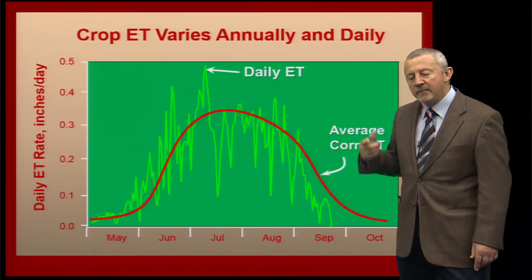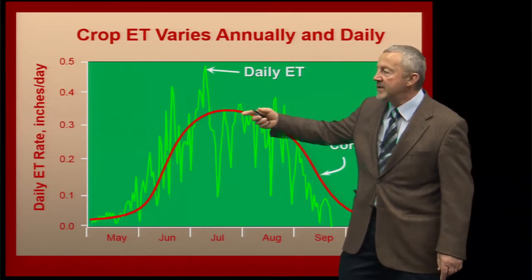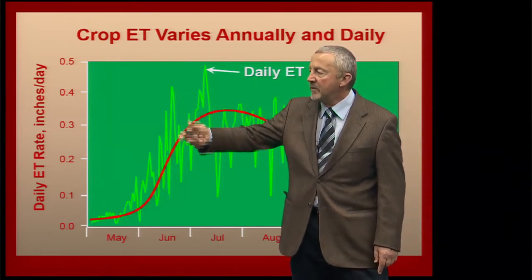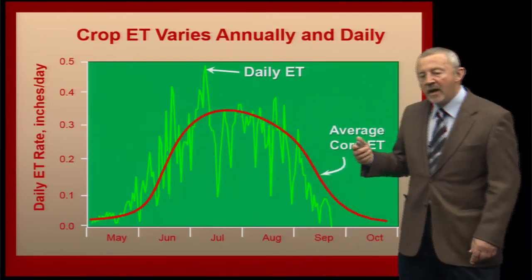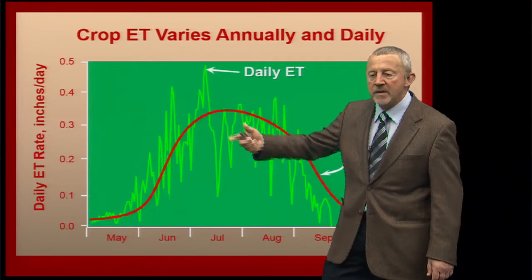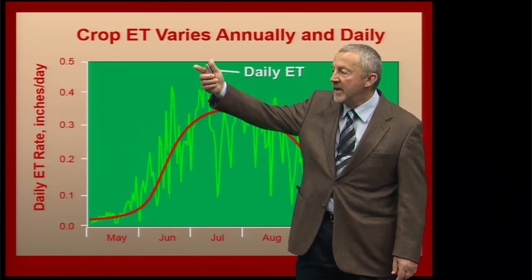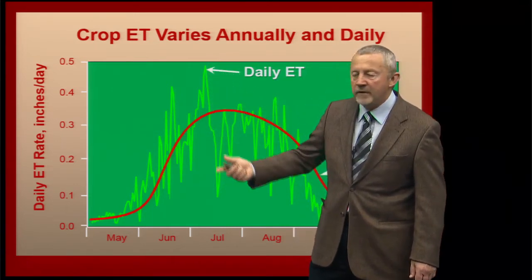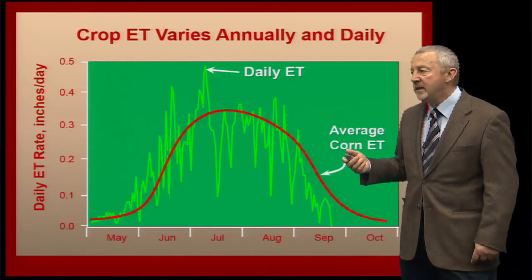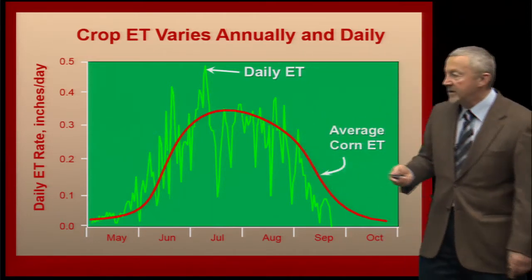The importance of monitoring your soil water content and managing your irrigation system is illustrated when you compare the long-term graph to the more jagged line representing an annual basis. On an annual basis, these numbers go up and down based on whether you've got cloud cover or a rainfall event. A really hot day might be followed by a period of rainfall and cooler temperatures. These day-to-day variations during the growing season are hard to predict, and it's difficult to use a long-term graph alone to manage irrigation.